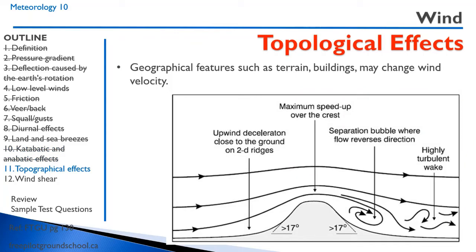Topographical effects of geographical features such as terrain and buildings may change the wind velocity. Wind flowing from left to right over a hill creates upwind deceleration before the hill. Over the crest, the wind speeds up — just like over the top of a wing. On the leeward side, there's a separation of airflow creating eddies and turbulence, just like turbulence in a river when water flows over a rock.